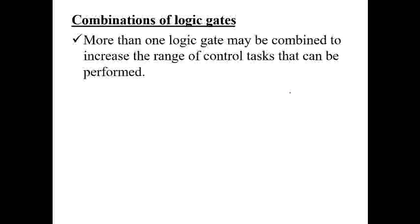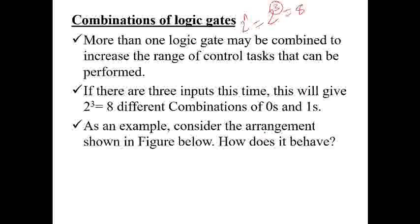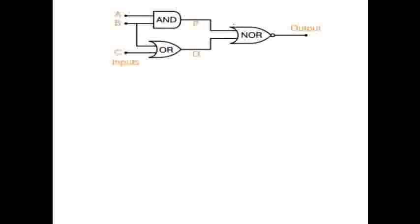We can also combine two or more logic gates to increase the range of control tasks that can be performed. For example, with three inputs we use 2³ = 8, because to get the number of row combinations we use 2 to the power of n, where n is the number of inputs. With 3 inputs, 2³ = 8. Consider the example image shown: we have three logic gates combined with three inputs.